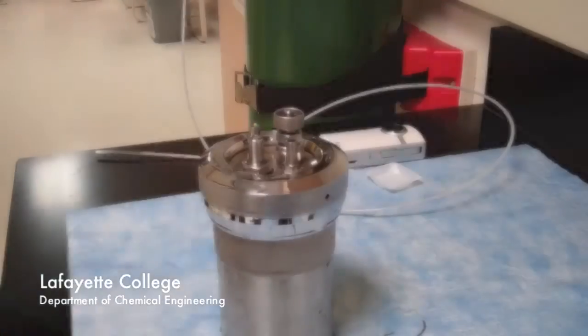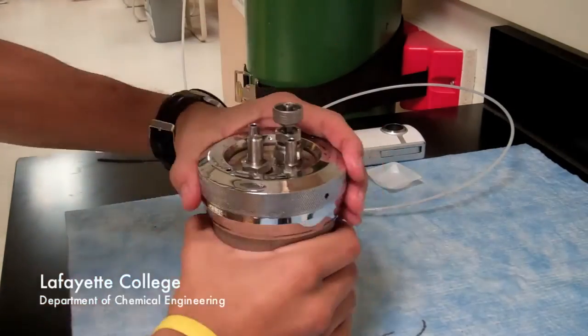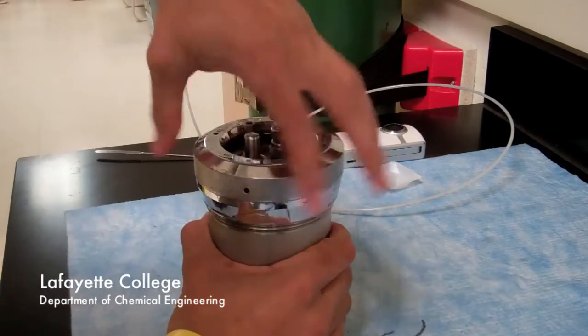Remove the bomb from the calorimeter. Depressurize the bomb by opening the gas release valve slowly. Allow all of the oxygen to escape the bomb.